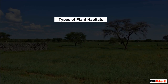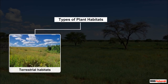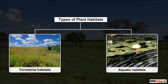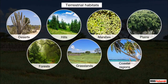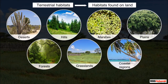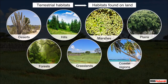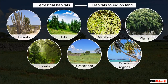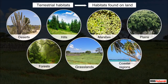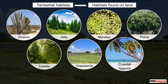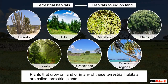Broadly, there are two types of plant habitats: terrestrial habitats and aquatic habitats. Terrestrial habitats are the habitats found on land. These include deserts, hills, marshes, plains, forests, grasslands, and coastal regions. Plants that grow on land or in any of these terrestrial habitats are called terrestrial plants.